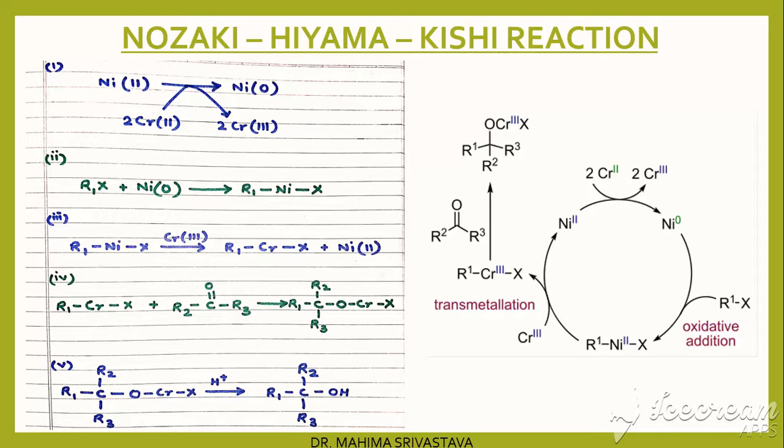This organochromium halide comes in contact with ketone and forms a complex compound with an oxygen-chromium bond which is introduced here. This oxygen-chromium halide on protonation gives alcohol, and the cycle continues.